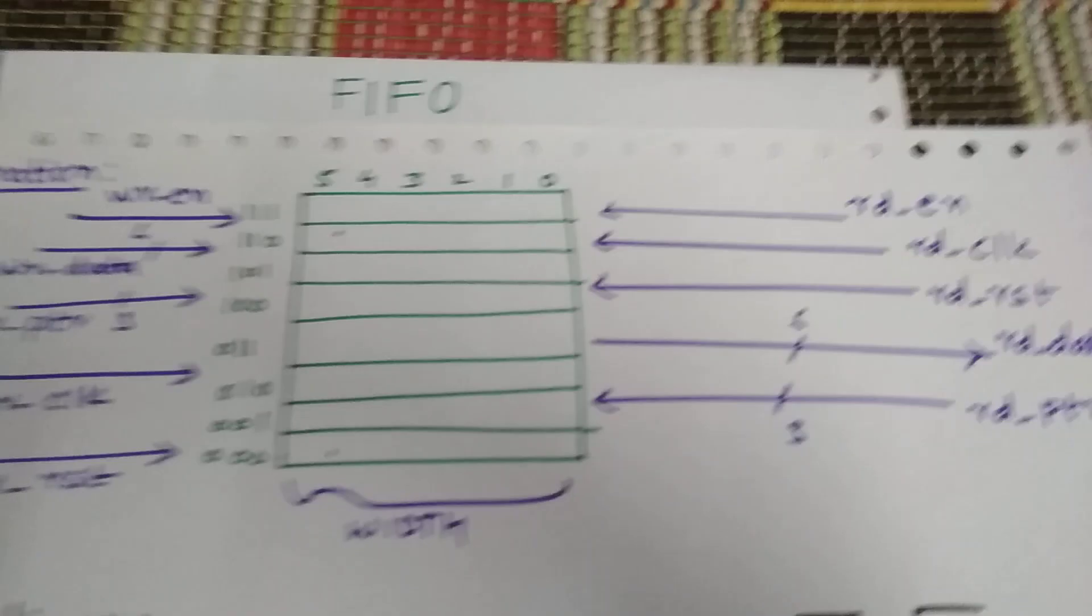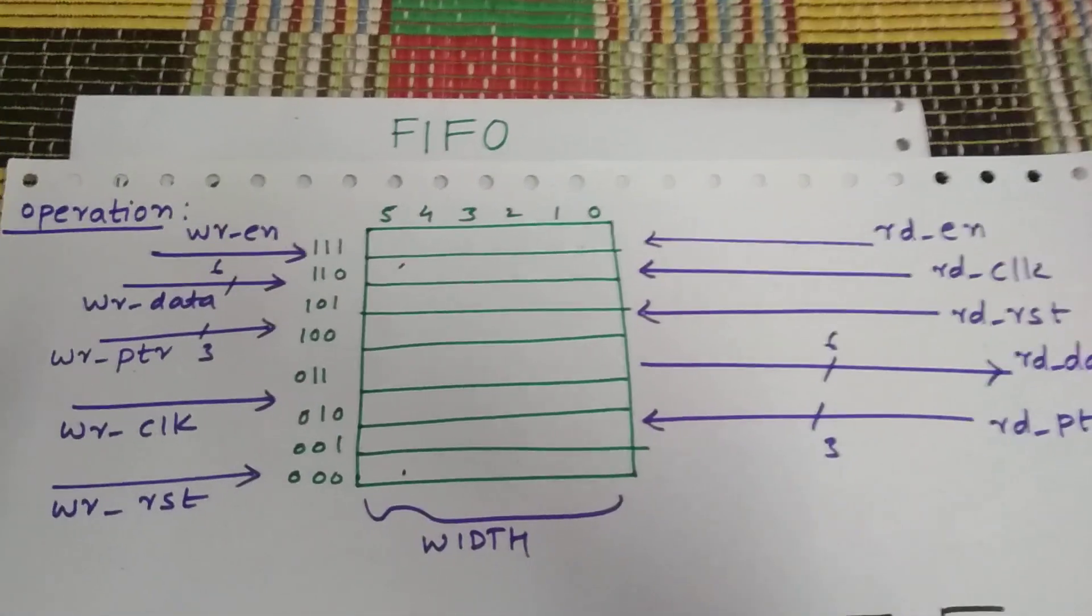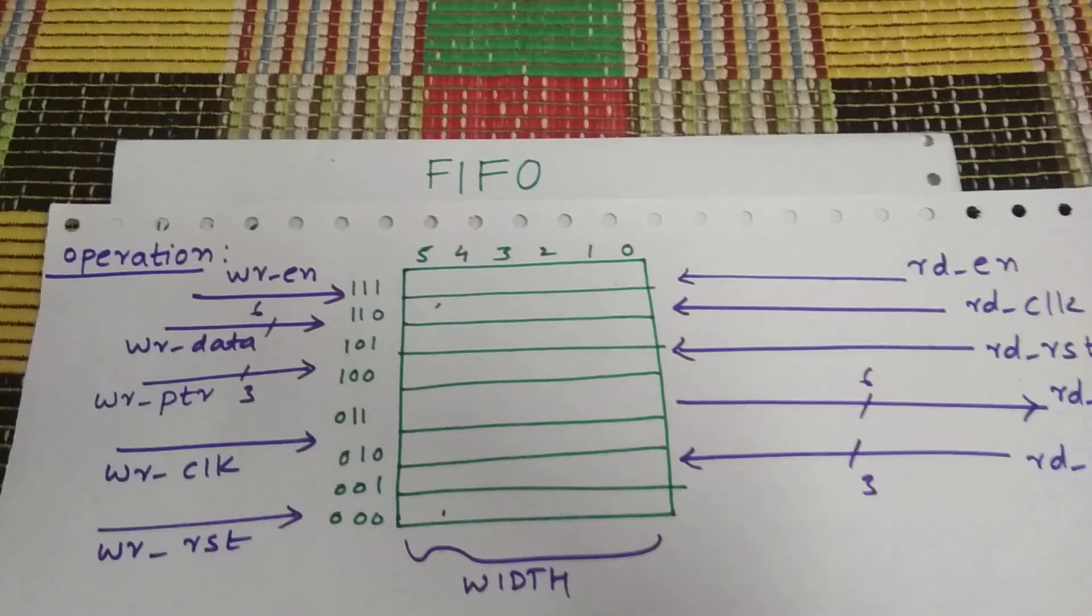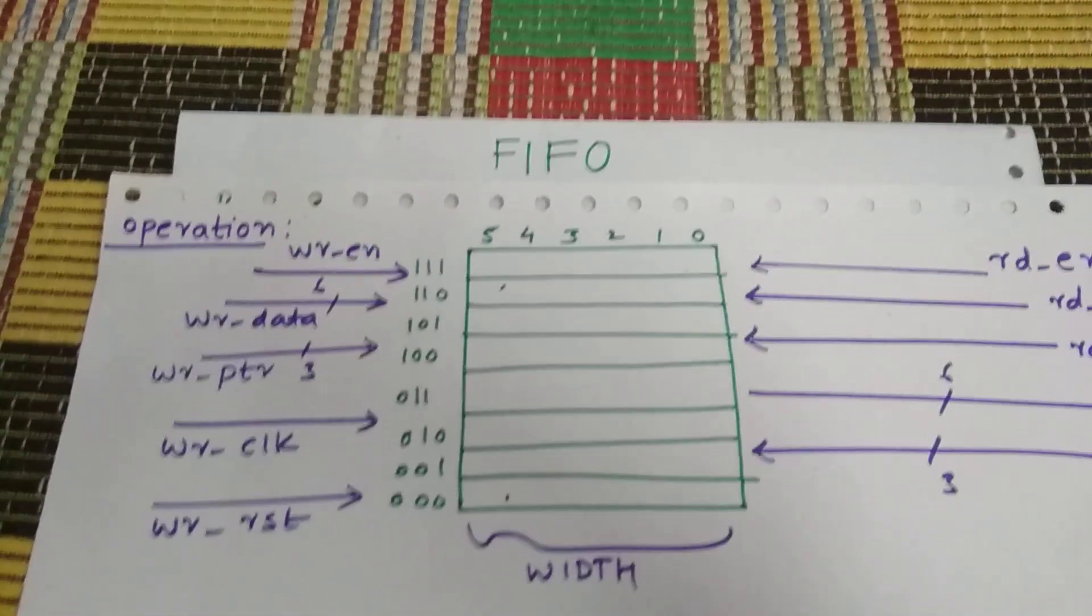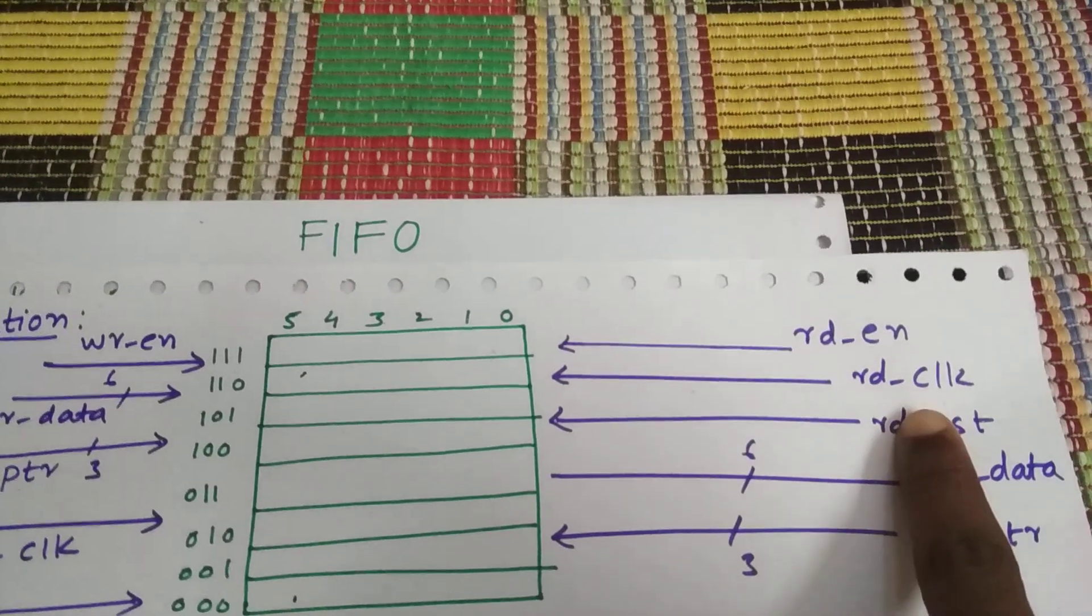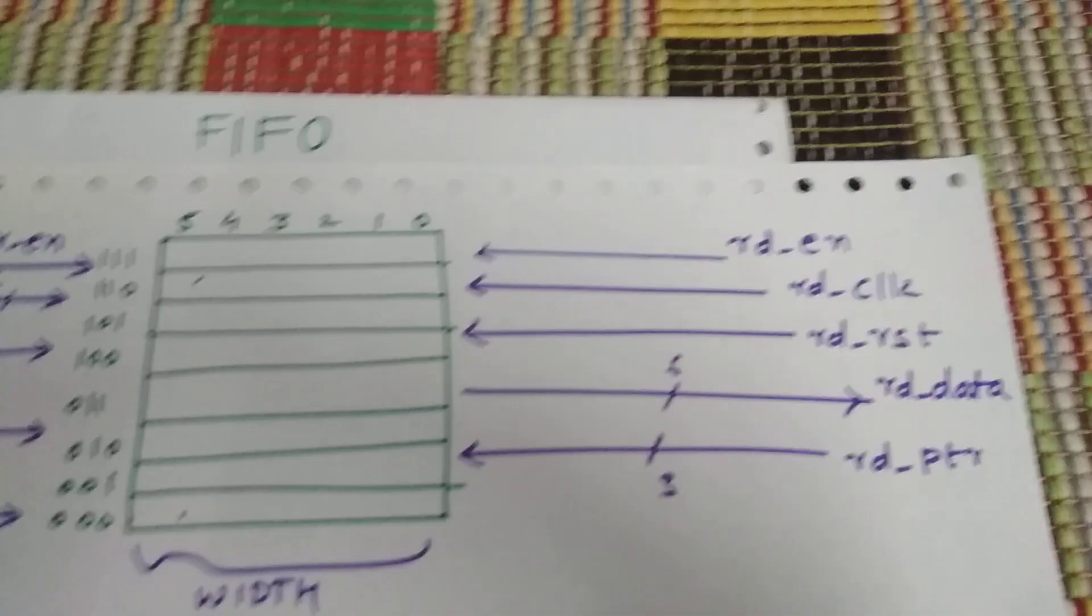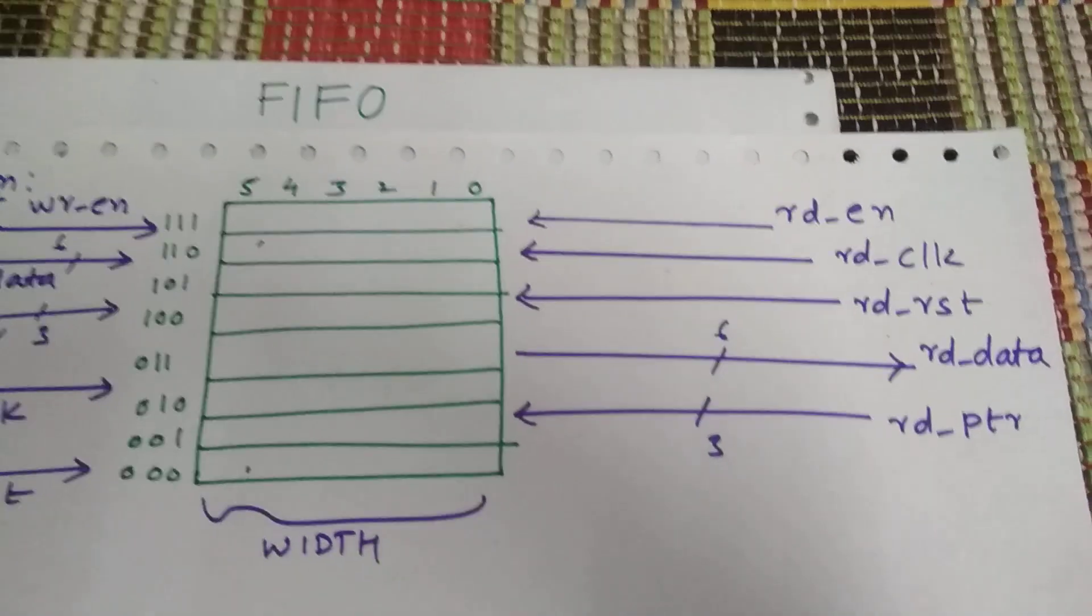So these are the interface signals for a FIFO. This is an asynchronous FIFO because it's working on two different clocks, write clock and read clock.